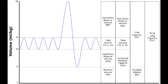Name the different types of lung capacities. The lung capacities include the inspiratory capacity, the functional residual capacity, vital capacity, and the total lung capacity.